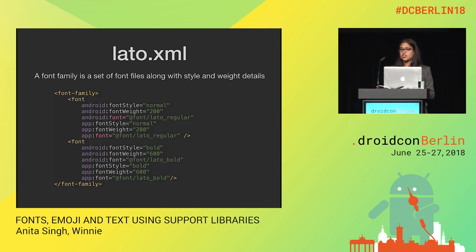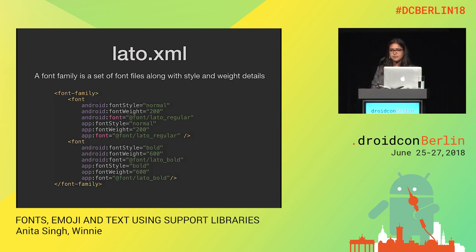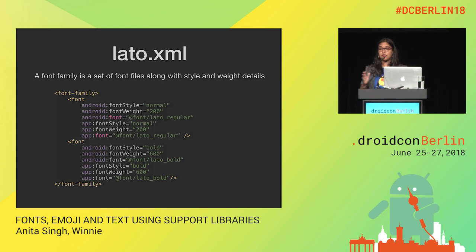Another thing you can add to the font resource directory is something called a font family file. It sets up the relationship between styles and weights of fonts. For example, typically when you use a font, you have a lot of different weights. Using Lotto as an example, which is a Google font, you have Lotto Black, Lotto Semi Bold, Lotto Bold, and you don't want to refer to five or six different custom fonts all throughout your layout files. Font family files are really helpful because you can set the relationship between the weight and the style, and you can just use the font family all over your layout file.